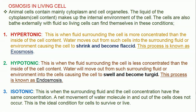Two: hypotonic solution — this is when the fluid surrounding the cell is less concentrated than the inside of the cell content, so water will move from the surrounding fluid into the cells, causing the cells to swell and become turgid. This process is known as endosmosis. Three: isotonic solution — this is when the surrounding fluid and the cell content have the same concentration, so a net movement of water molecules in and out of the cell does not occur. This is the ideal condition for cells to survive in living organisms.